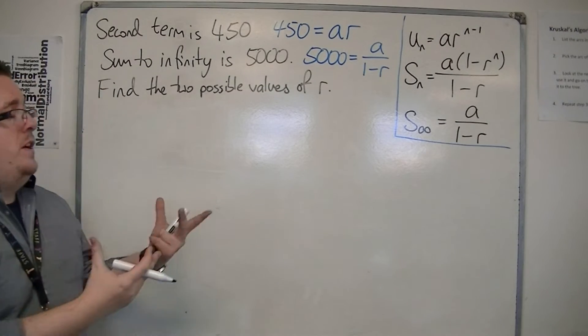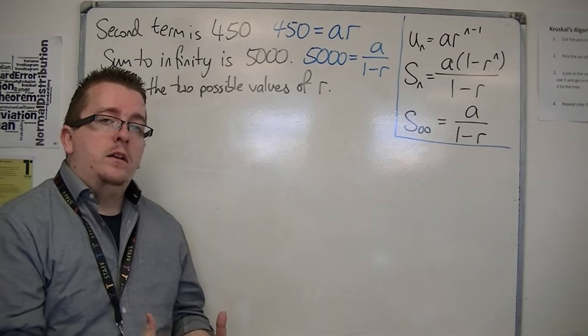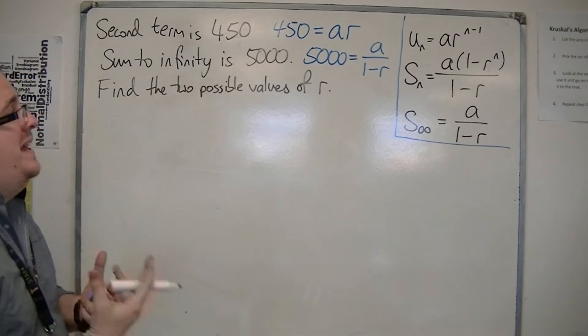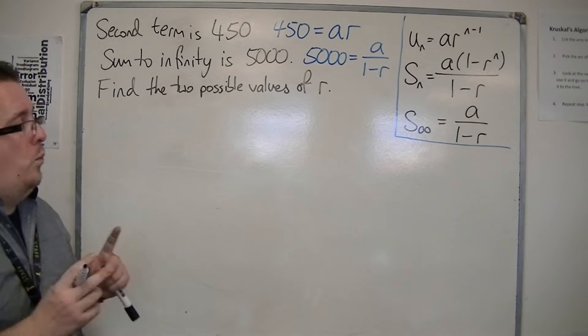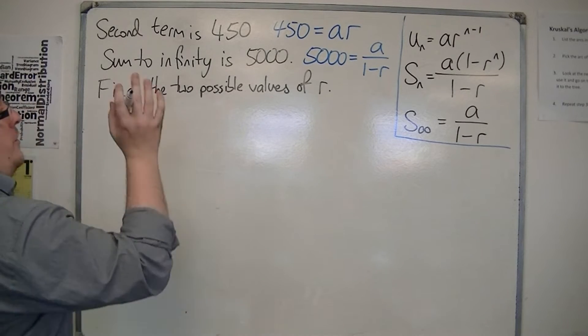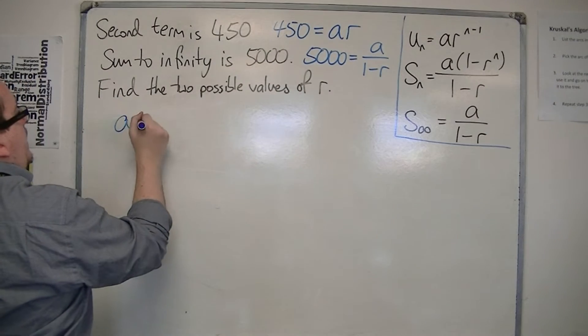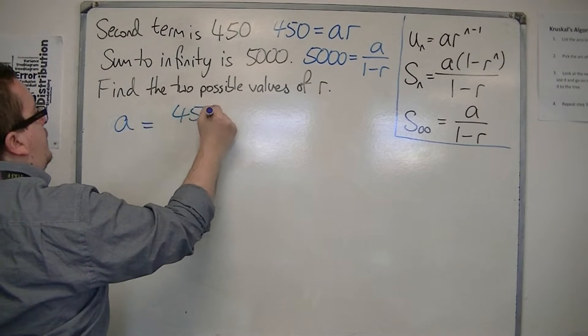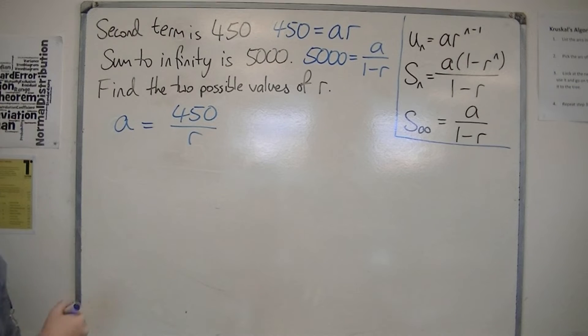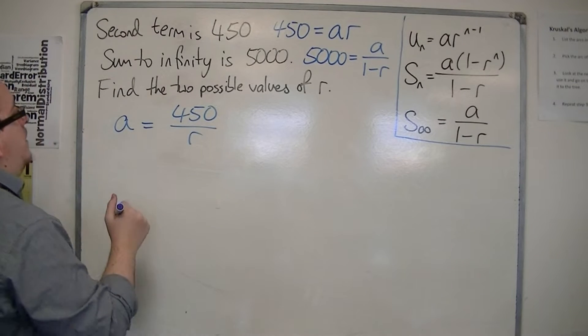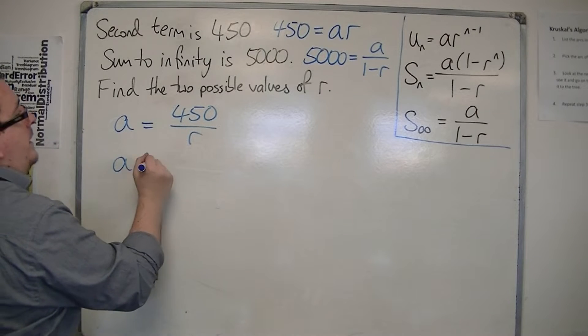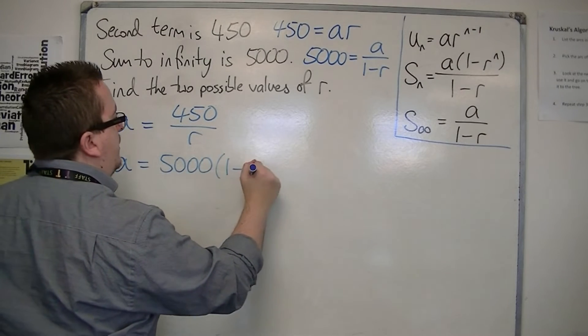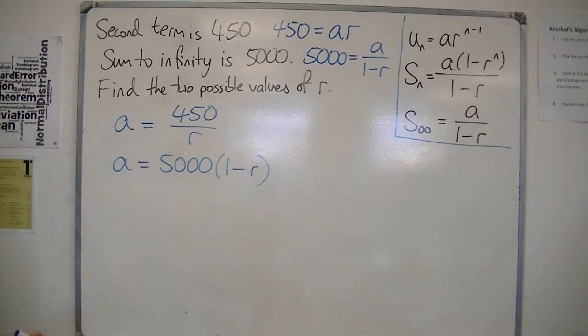Now, we're asked to find the two possible values of r. So, we want to somehow eliminate the a's. What I'm going to do is rearrange the first equation to write it as a is 450 over r. And I'm going to rearrange the second equation to say that a is 5000 times 1 minus r, multiplying both sides by the 1 minus r.